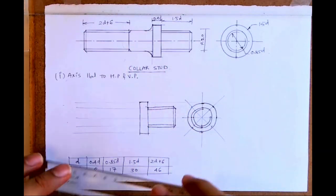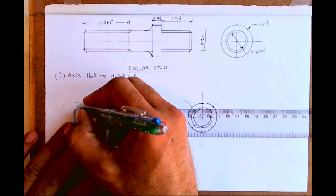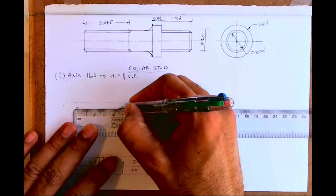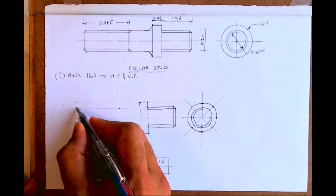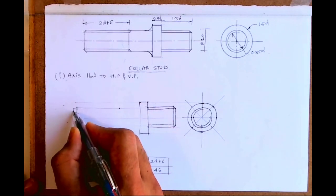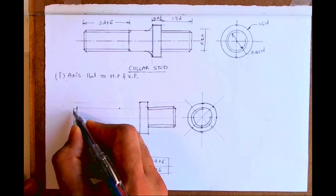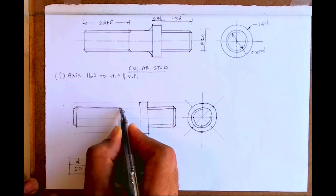Then this is any distance and 2D plus 6. So 2D plus 6 is 46, 26, and any random distance you can take somewhere around 20. So 46 plus 26 is 66. Join this. This much is the threaded portion, 2D plus 6.